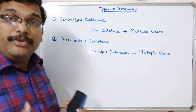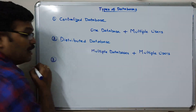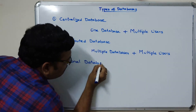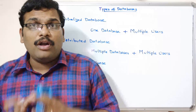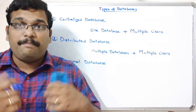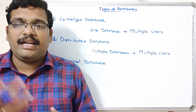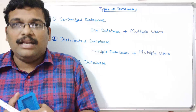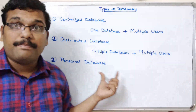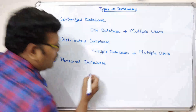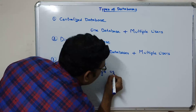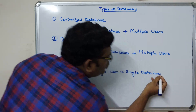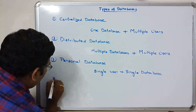The third type is the personal database. A personal database is a very small database maintained by a single user. On our personal computers or laptops we can maintain and access such a database. It is maintained by a single user for personal purposes — single user, single database.